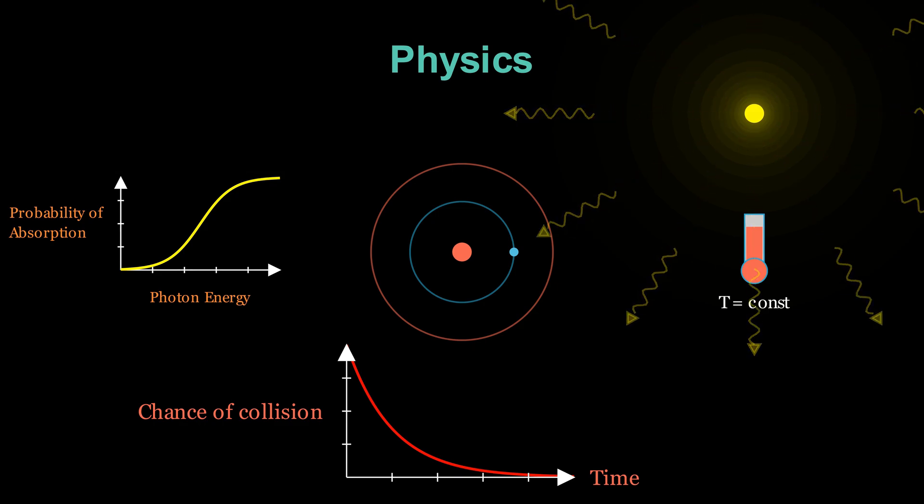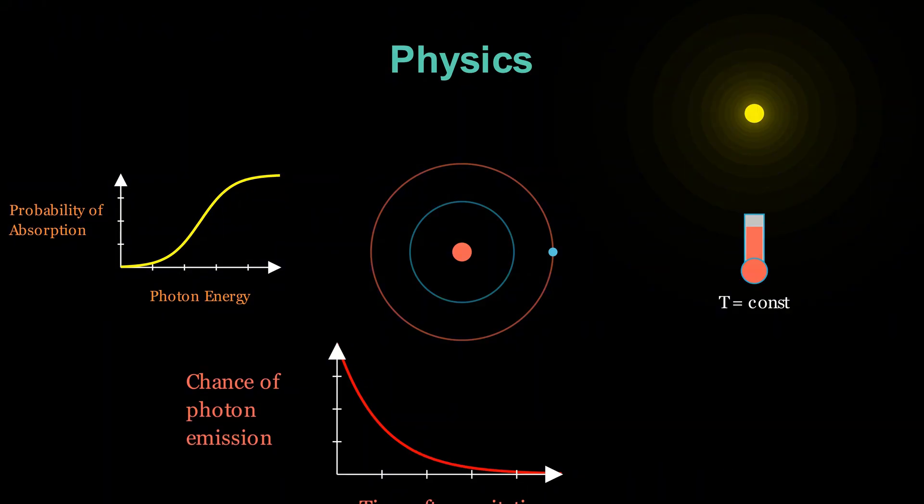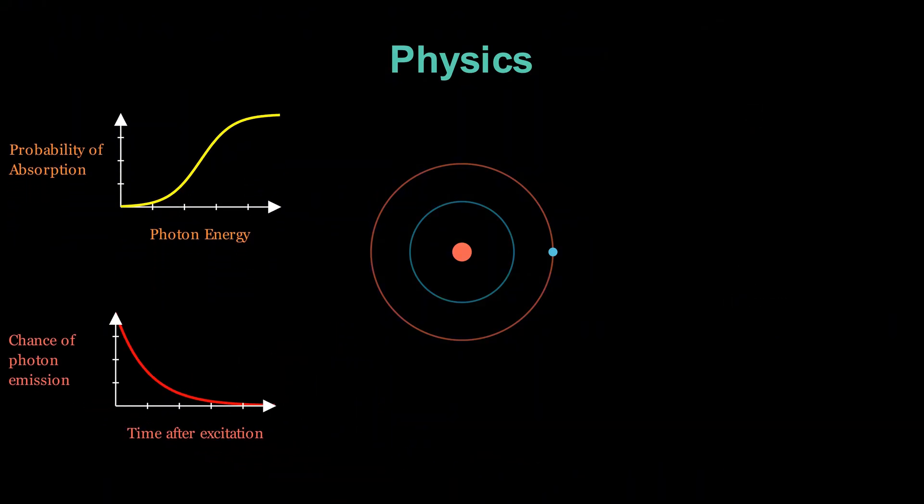Similarly, once the electron is excited to the higher energy level, we can't predict exactly when it will drop back down and emit a photon. All we can do is assign probabilities. In statistical physics, the probability of the electron being in a particular state, say, the lower or upper orbit, depends on that state's energy. The formula is beautifully simple.